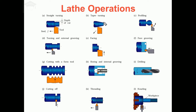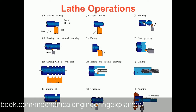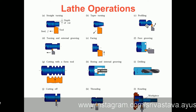Next comes taper turning. In taper turning, we provide a constant slope at a particular angle. The taper is produced by starting from a point and moving the tool along the slope at a constant angle. This generates a taper profile, and this operation is known as taper turning.